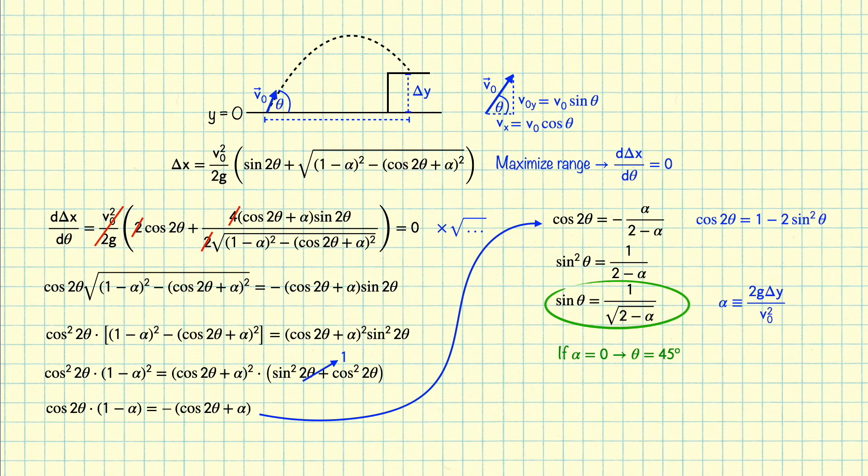Now if alpha is small, we can approximate that theta will be about 45 degrees plus this quantity 1 plus alpha over pi, so a little bit more than 45 degrees. And if alpha is very large and negative, this would correspond to throwing to someone very far below you, so like if you were at the top of a cliff throwing to someone at the bottom of the cliff.